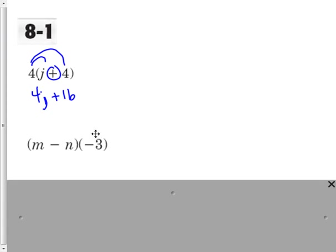The number is on the other side, but that doesn't really matter. First thing I want to do is change everything to addition, so let's go adding a negative n. So let's do negative 3 times m, which is negative 3m, plus negative 3 times negative m. That's a negative times a negative, so it's going to be a positive 3n. And that would be my simplified answer.